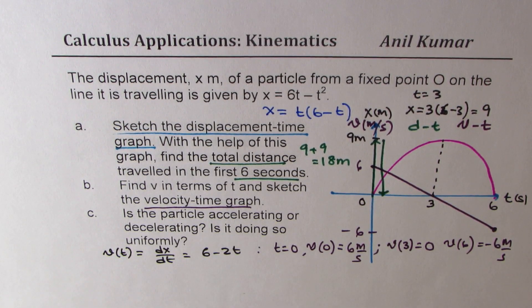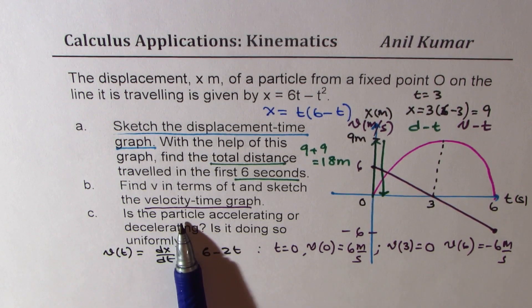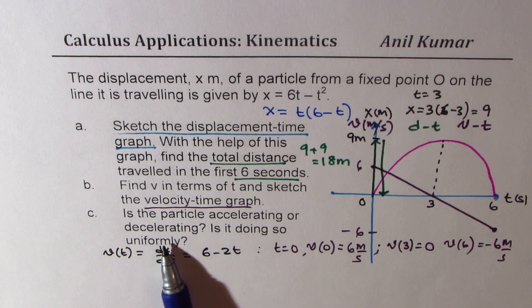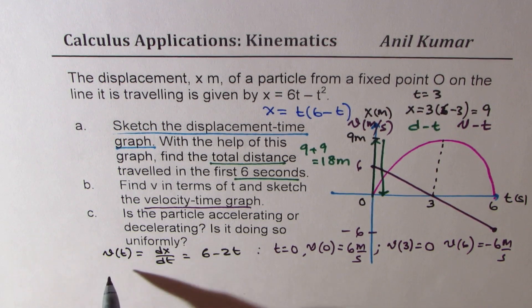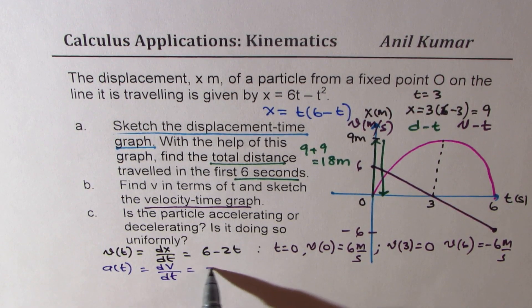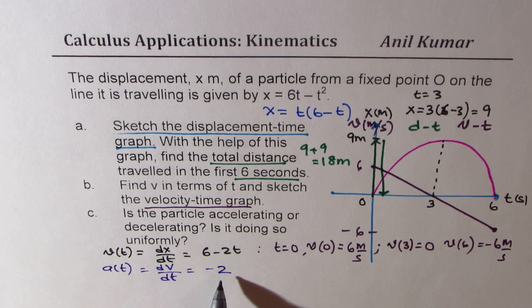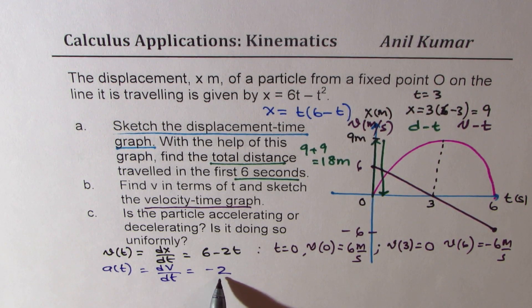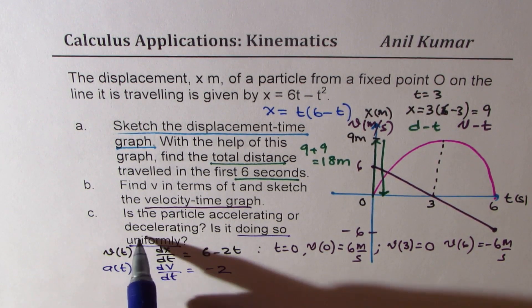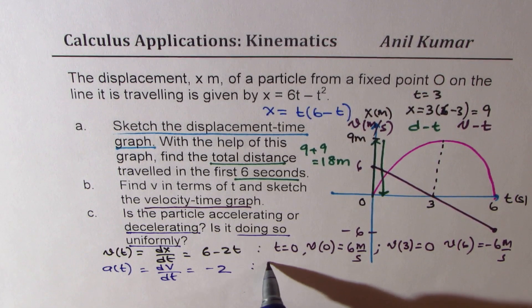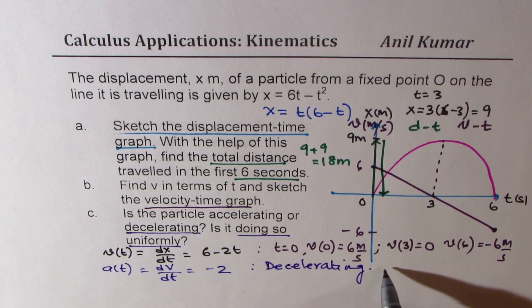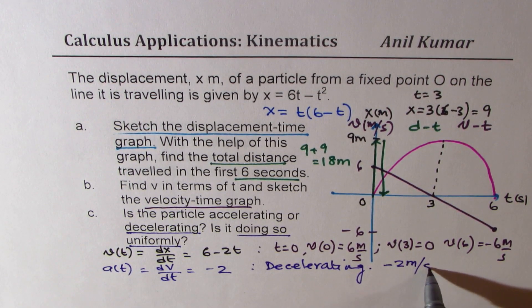Now part c here is, is the particle accelerating or decelerating? Is it doing so uniformly? So to find that, we need to find acceleration. So acceleration is dv dt, which you get here as minus 2. So we get that the acceleration is constant. So it is doing so uniformly. It is minus 2, that means it is deaccelerating.